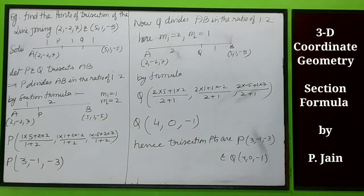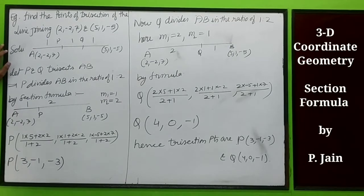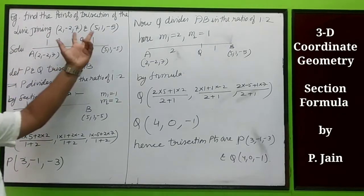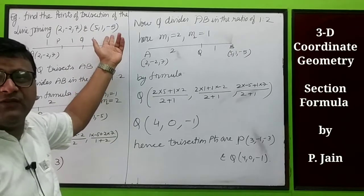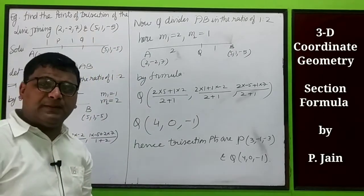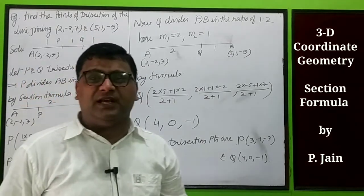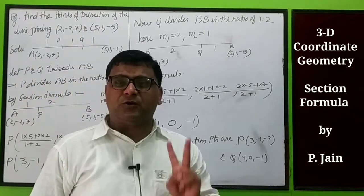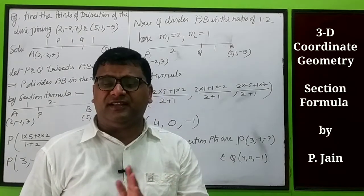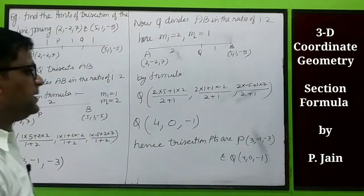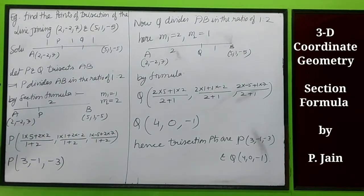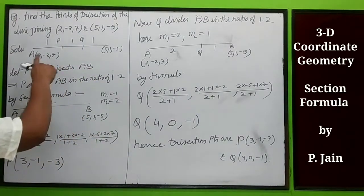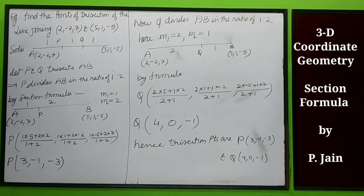Now a very good example: find the points of trisection of the line joining (2, -2, 7) and (5, 1, -5). We need to find two points which divide it into three equal parts. Let P and Q be the two points which trisect AB. This implies the three parts are in ratio 1:1:1. When we calculate P, point P divides AB in the ratio 1 is to 2.